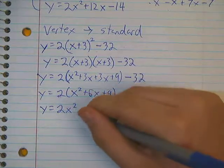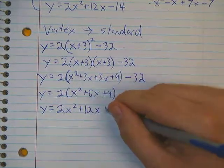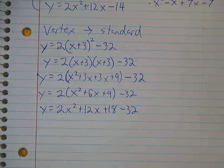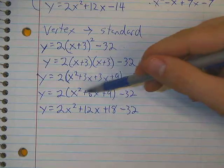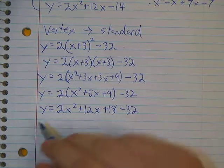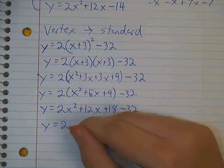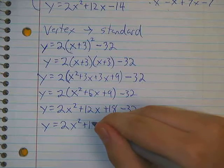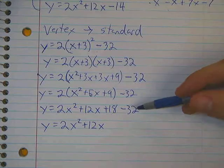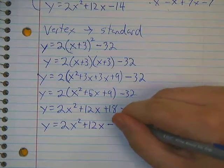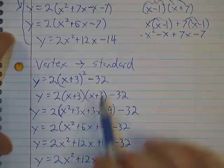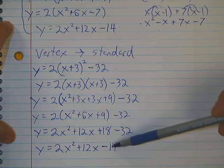And now we have a distribution problem here again with this 2. Gives us 2x squared plus 12x plus 18 minus 32. And all I did there was distribute this 2 into that set of parentheses. And last but not least, let's combine that 18 and that 32. We get 2x squared plus 12x minus 14.